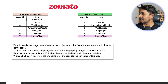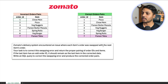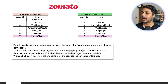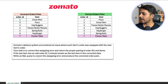The problem says: Zomato's delivery system encountered an issue where each item order was swapped with the next item order. Your task is to correct the swapping error and return the proper pairing of the order ID and items. If the last item has an odd order ID, it should remain as the last item in the corrected data. Write a SQL query to correct the swapping error and produce the corrected order pair.